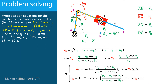The solution for the angle theta 3 depends on the sign of cosine theta 3. If cosine theta 3 is positive, then theta 3 is simply the arctangent of the ratio of R0 minus R2 sine theta 2 by R1 minus R2 cosine theta 2. If cosine theta 3 is negative, we need to add 180 degrees, and then theta 3 equals 180 degrees plus arctangent of the ratio of R0 minus R2 sine theta 2 by R1 minus R2 cosine theta 2.